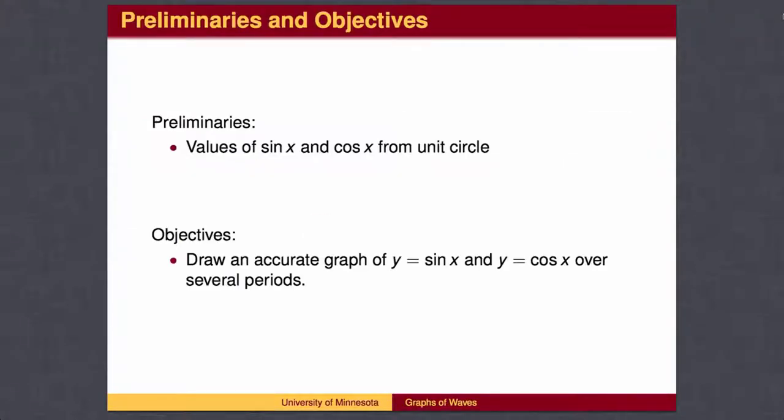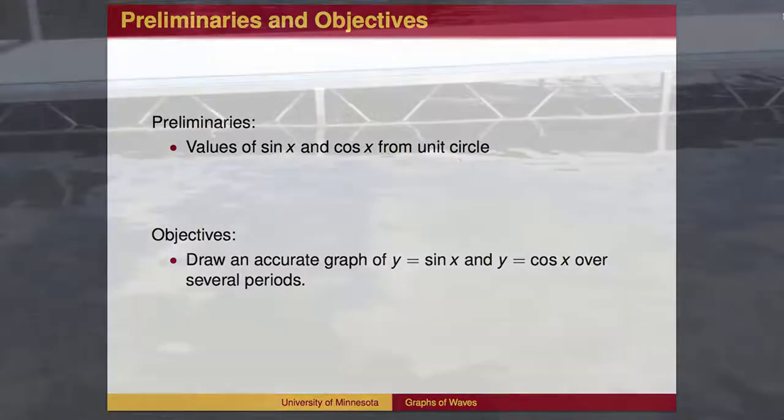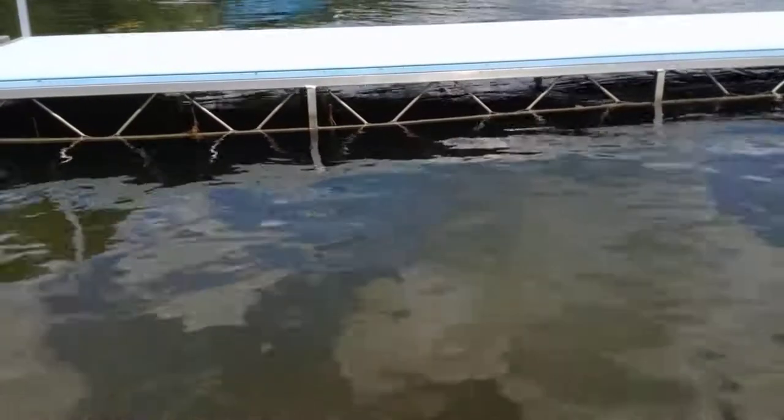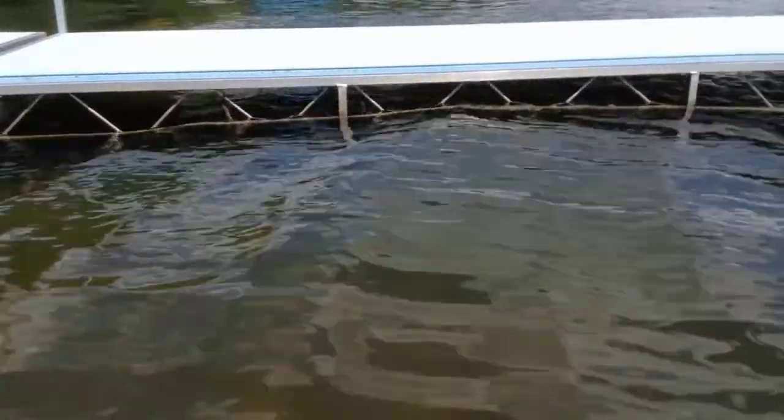Graphs of Waves. You should be familiar with the values of sine and cosine between 0 and 2π from the unit circle. In this lesson, we will draw an accurate graph of the functions y = sin(x) and y = cos(x). The graphs of y = sin(x) and y = cos(x) are known as waves. There is a strong connection between the graph of the sine or cosine function and the waves you see rippling in a body of water. But that is a lesson in physics, so we won't discuss it here.